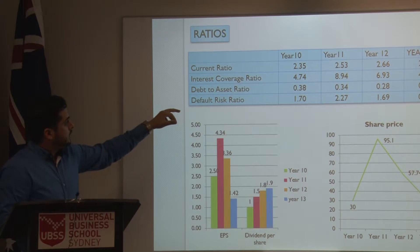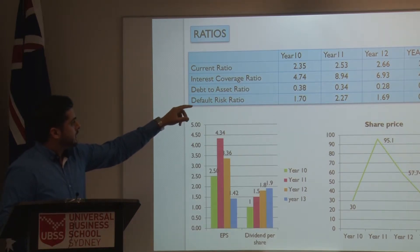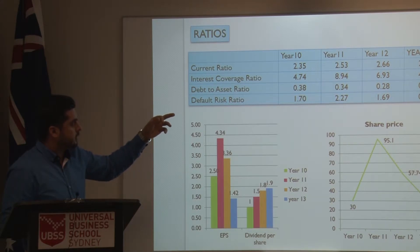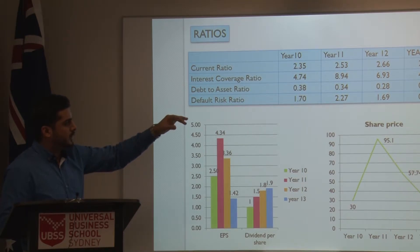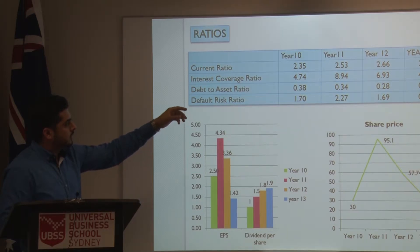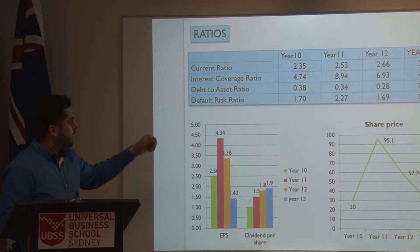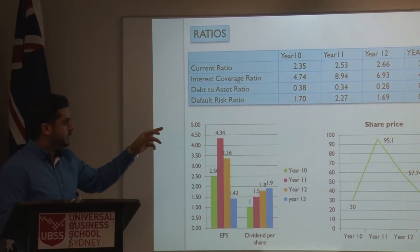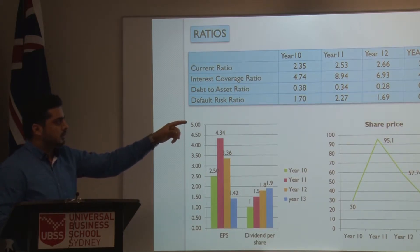Looking at the current ratio — in year 10 it increased a bit, year 12 it was very good, and in year 13 it decreased a bit. For the interest cover ratio, we can see that until year 12 we were good, but in year 13 we went down. The debt-to-asset ratio became low, and the default ratio also became low because our business decreased.